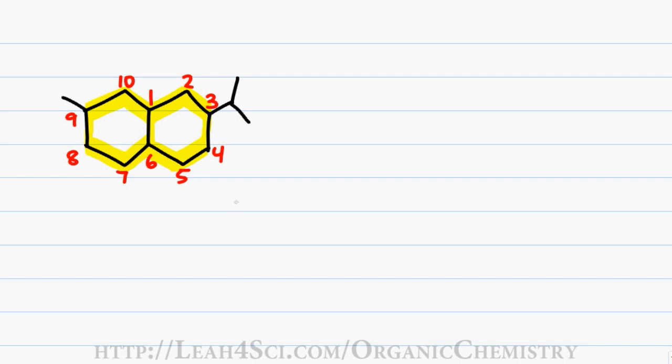Ten carbons gives me a first name of dec, only single bonds gives me a last name of ane. Since I have two rings, I add the prefix bicyclo and then open brackets to show what's in each ring. The ring on the right has four exclusive carbons. The ring on the left also has four exclusive carbons. And since there are no carbons on the bridge, we'll put a zero to show that it exists but has no carbons.